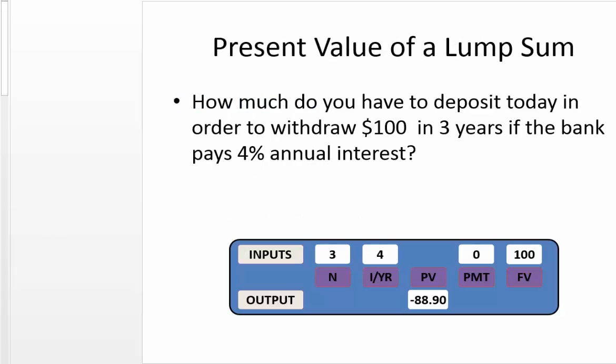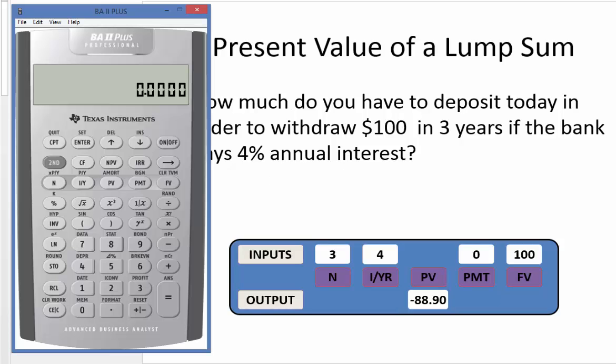In this case we want to deposit today. The goal is to save or accumulate $100 in three years, and the question is how much do you have to deposit today if you earn 4% annual interest and the money will be deposited for three years. So that implies finding the value today of an amount. That's the present value.